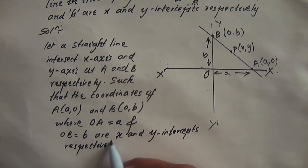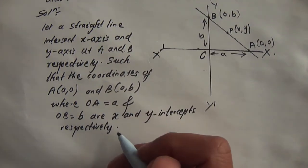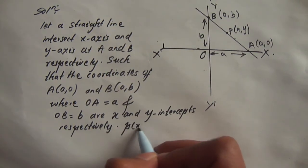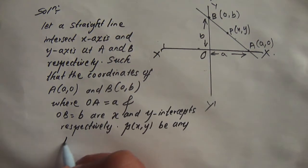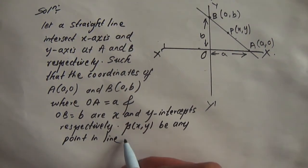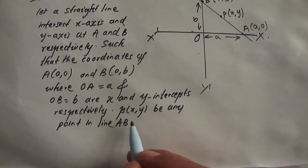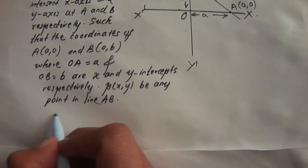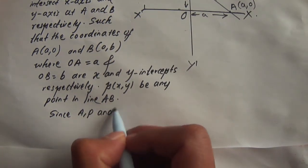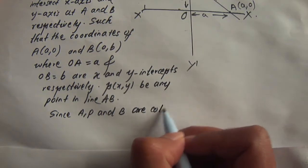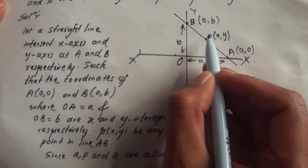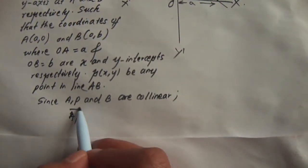So, I am going to write a straight line. Since A, P, and B are collinear, by the collinearity concept, AP vector is equal to k times PB vector, where k is a scalar quantity.